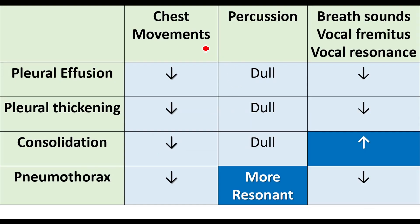Now let's have a look at this table. If you look at chest movements, you will see they are decreased in pleural effusion, pleural thickening, consolidation, and pneumothorax. So as discussed, if you find decreased chest movement in a patient, the pathology is most likely to lie on that side.